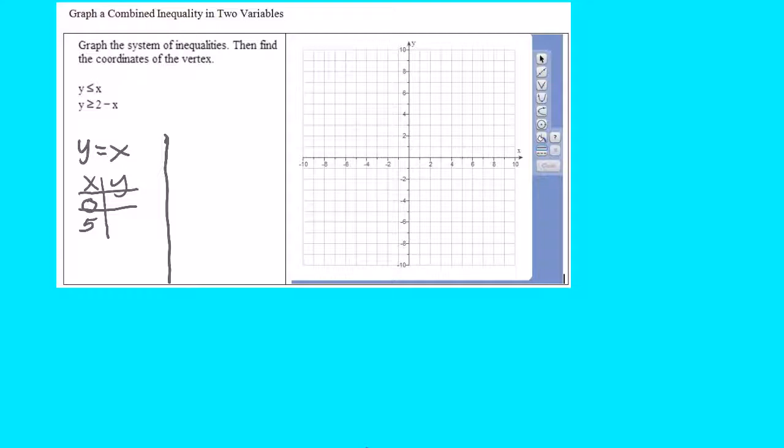If x is 0, y is 0. If x is 5, y is 5. And so I have the points 0, 0 and 5, 5. I'm going to plot them.